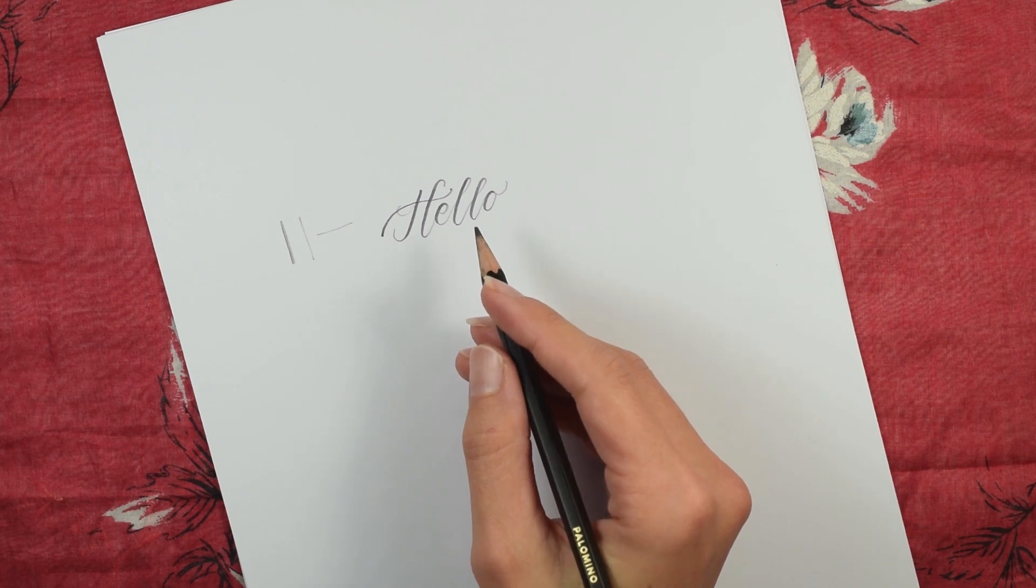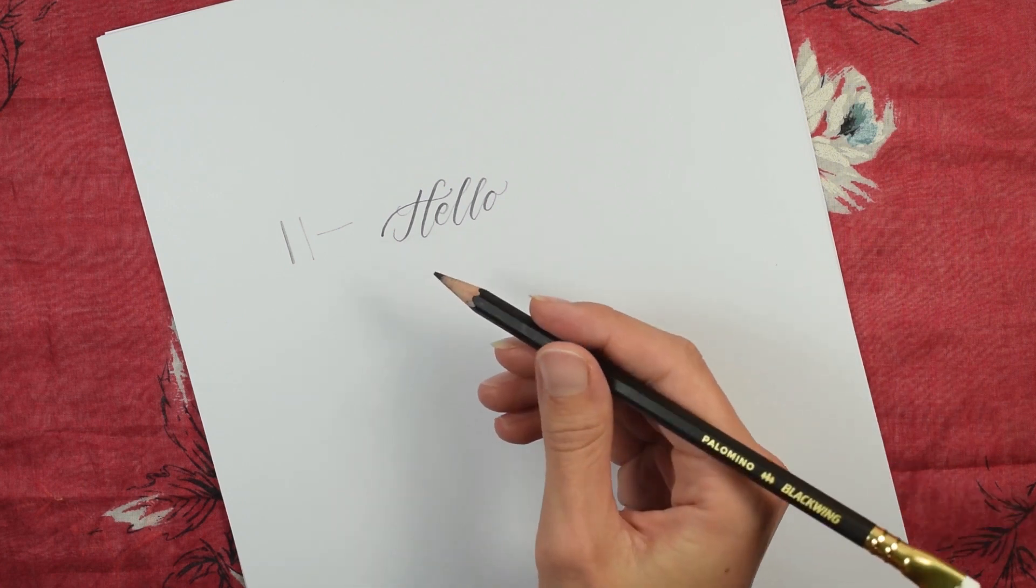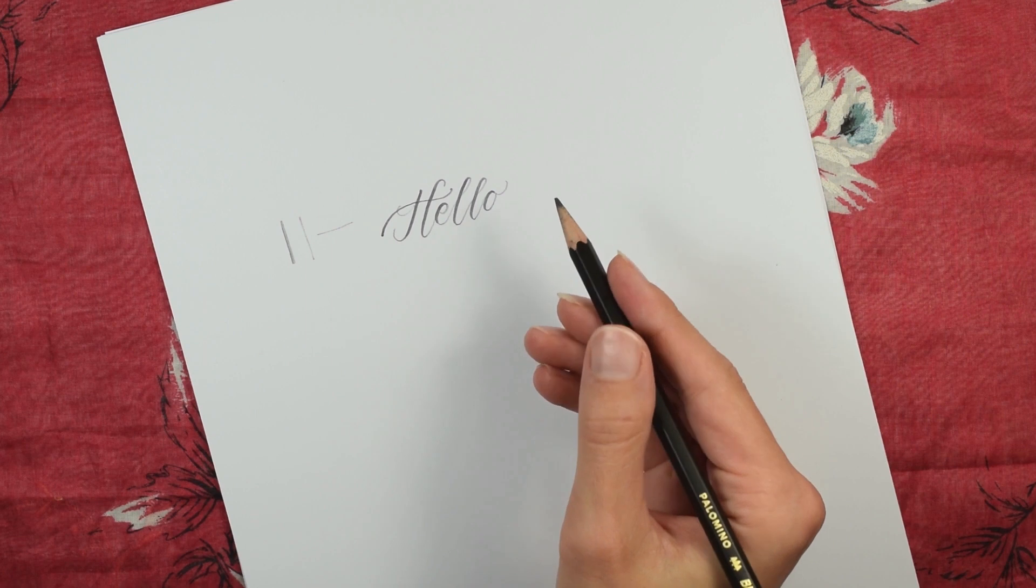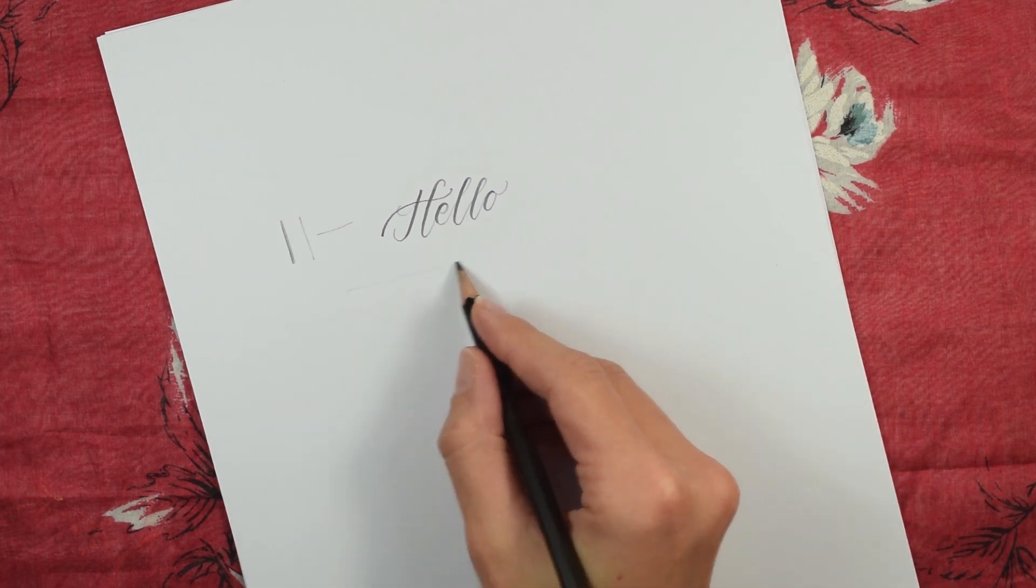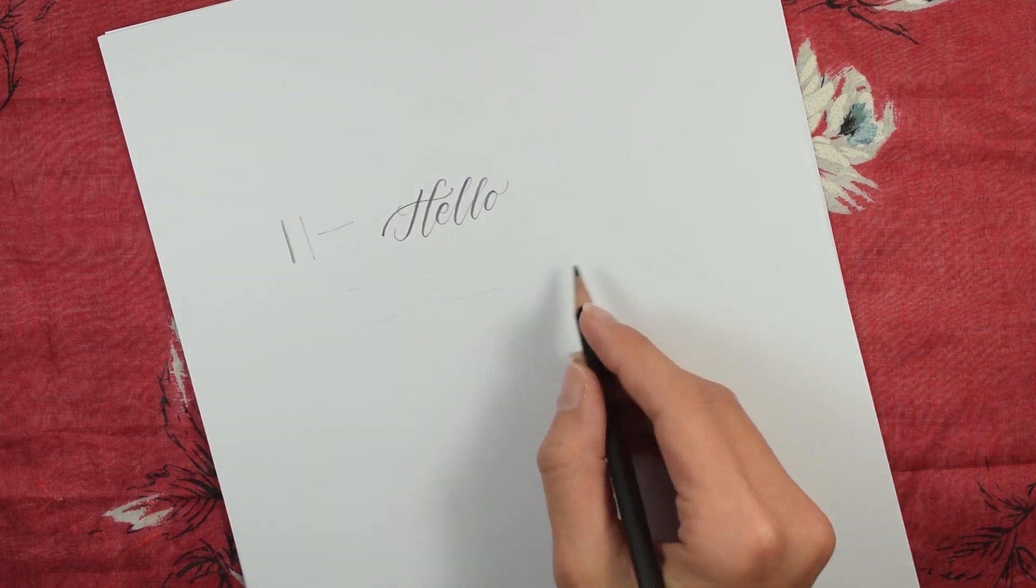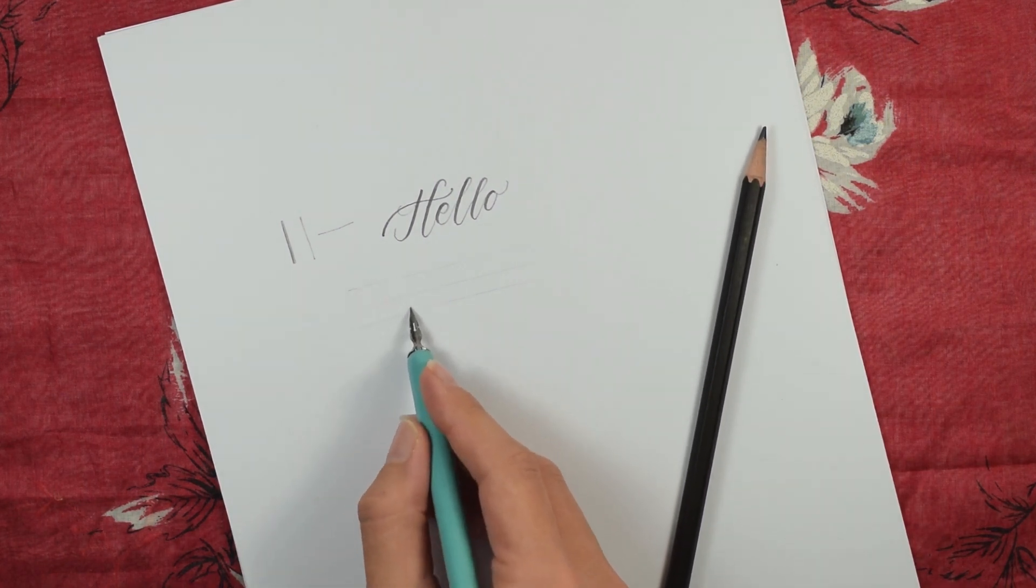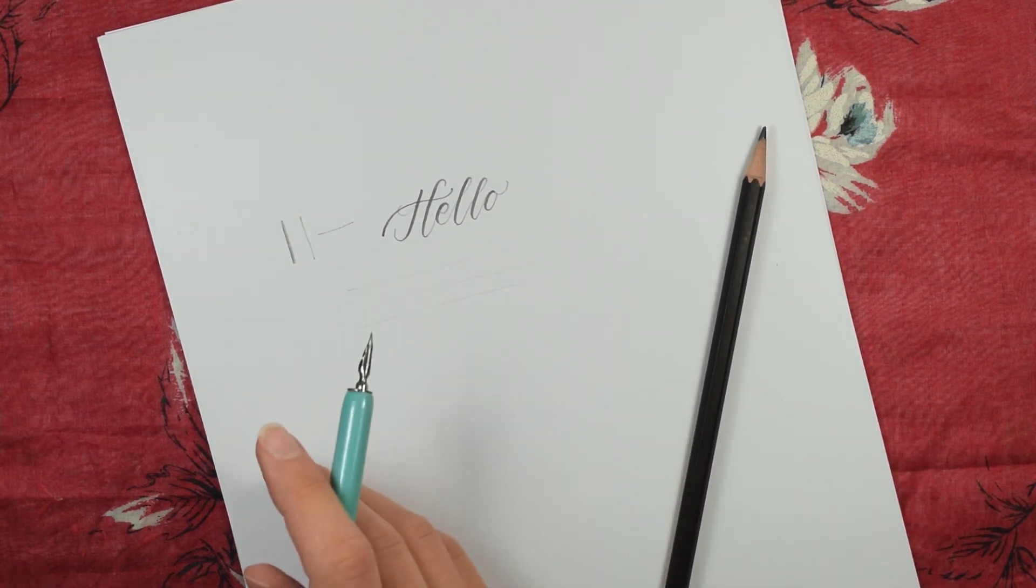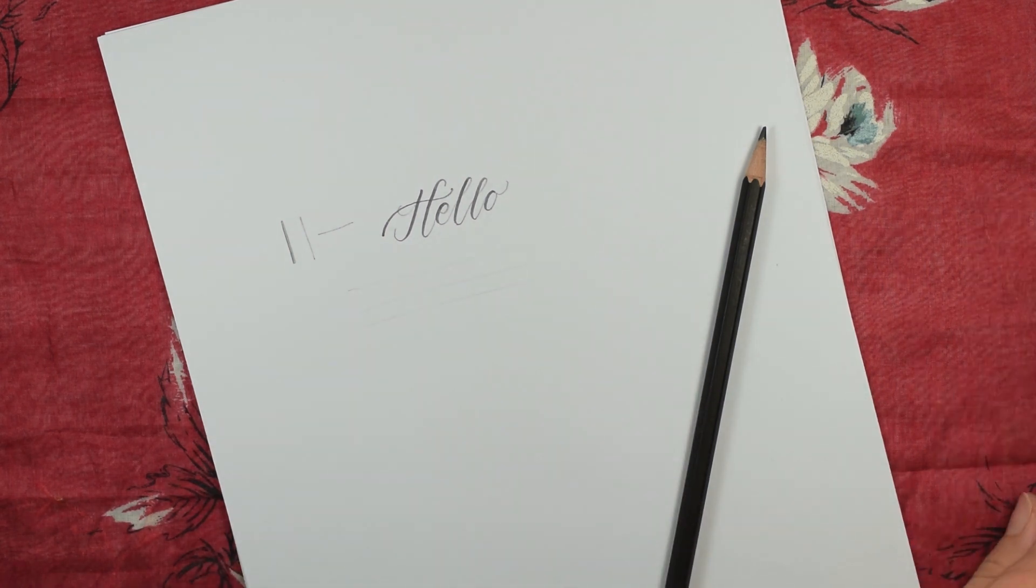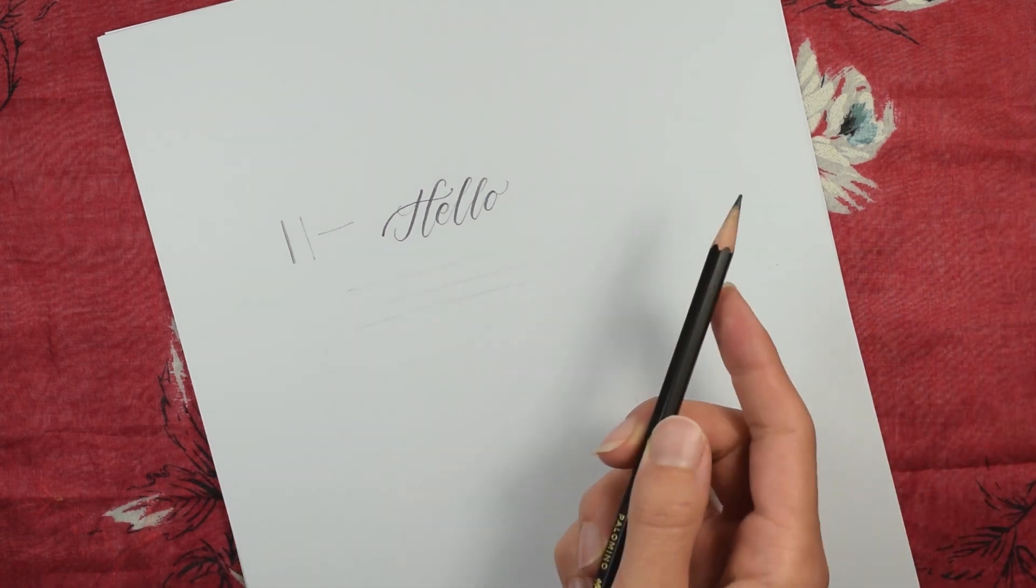Now there are a couple of disadvantages to using a pencil for calligraphy. First of all, when we do dip pen calligraphy, we normally draw our guidelines in pencil, right? And then we use our dip pen to write on those guidelines. And after the ink dries, we erase it. Obviously, you can't do that with a pencil.